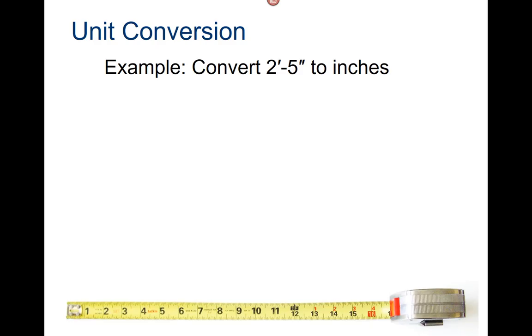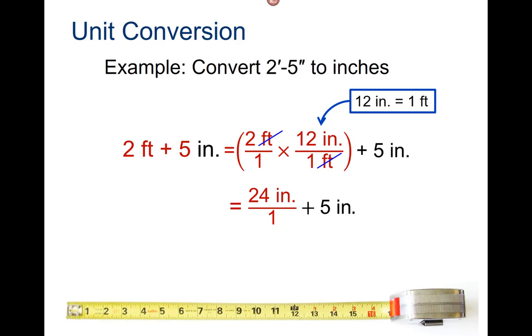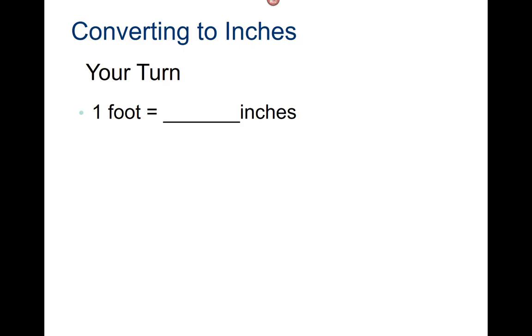Example. Here we have an architectural notation: two feet five inches. Let's convert this to inches. Two feet plus five inches. Two feet over one, times twelve inches over one foot, plus five inches. Converting feet to inches gives twenty-four inches. Twenty-four inches plus five inches is twenty-nine inches.